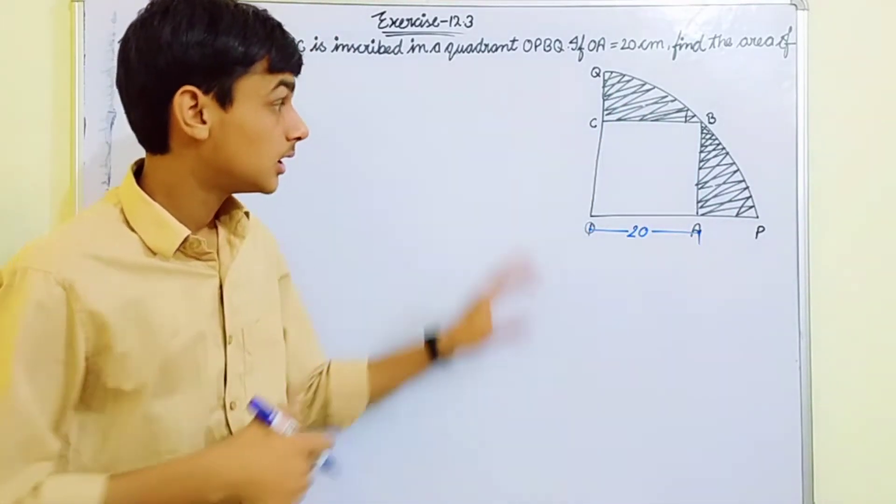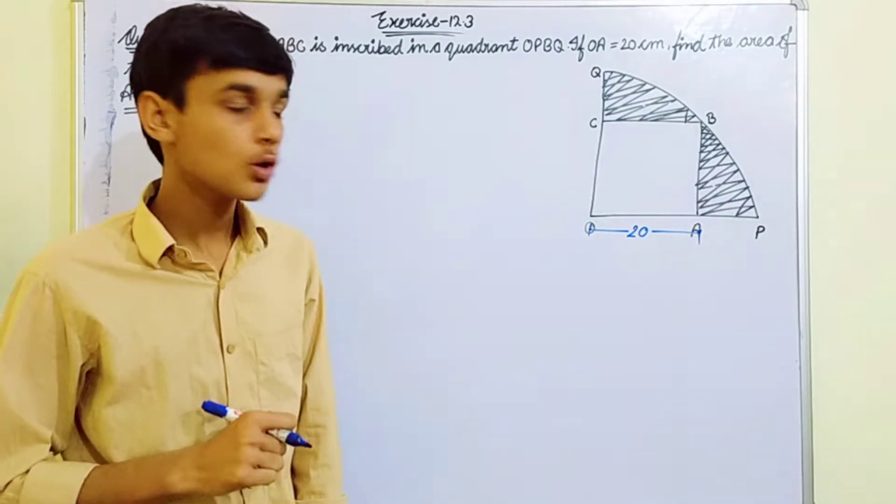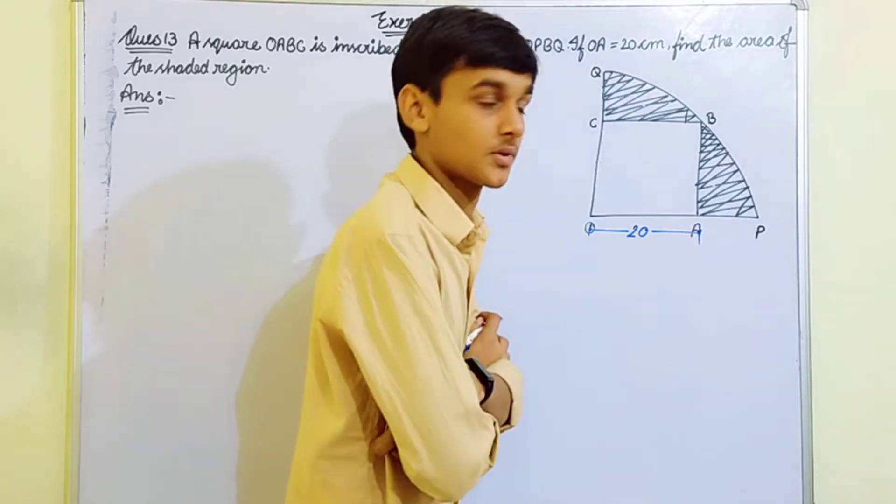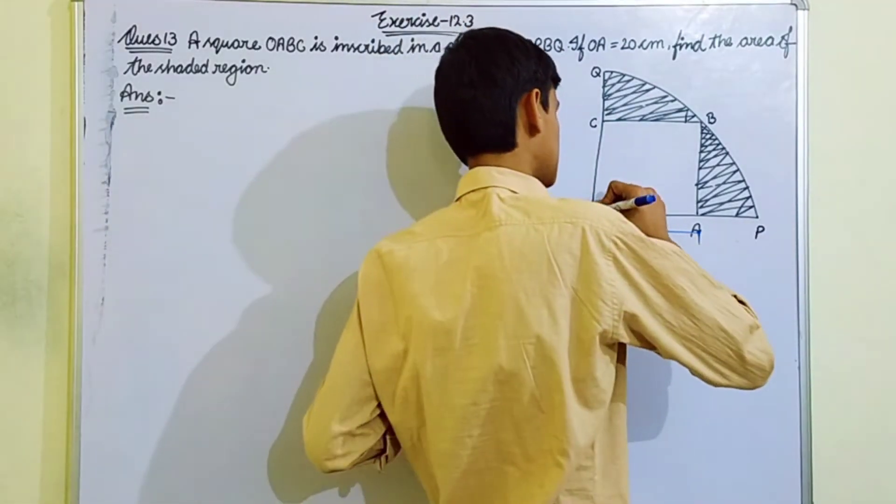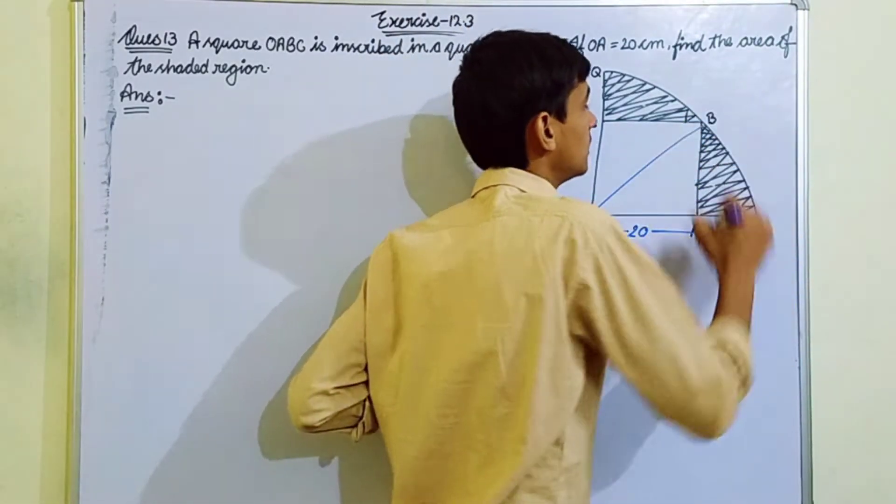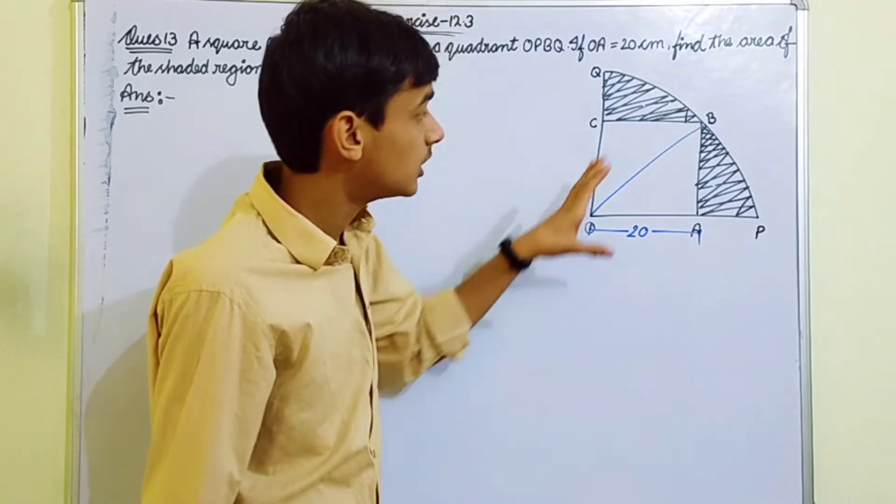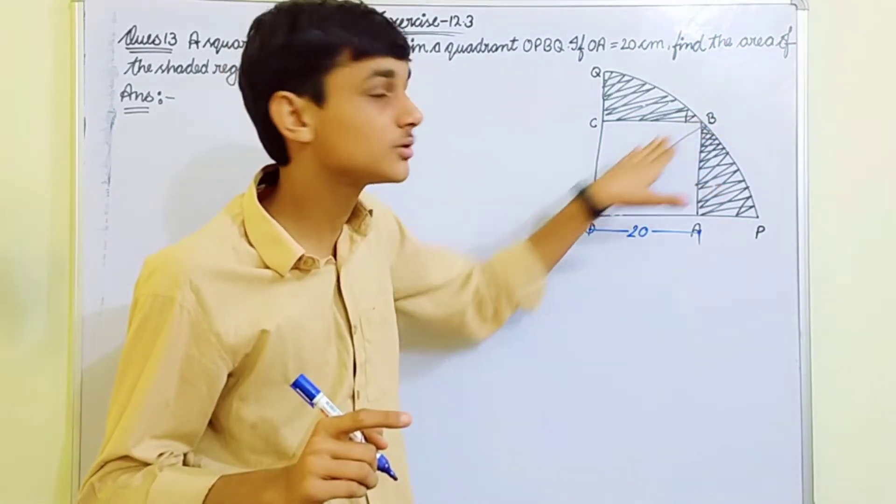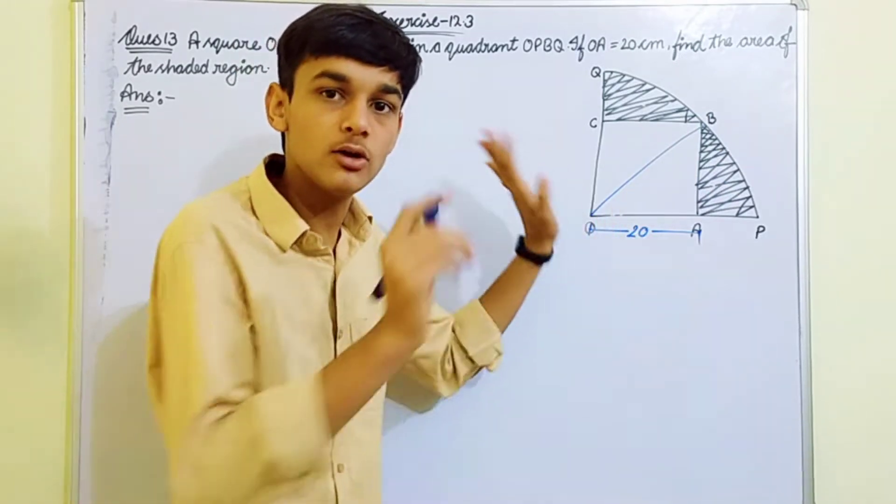Quadrant's area minus square's area will give us the shaded portion's area. We can't find the quadrant's area directly because the radius isn't given. Let me join this line here. When we join this, it is the diagonal of the square and it is also the radius.